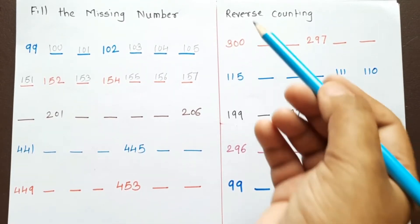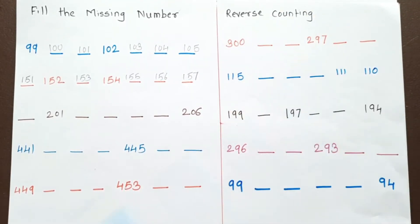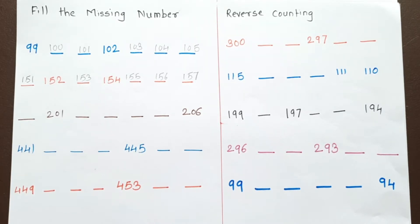Now the next worksheet is Reverse Counting. Reverse counting means backward counting. First we are going to start from the number 153. The first one is backward counting.